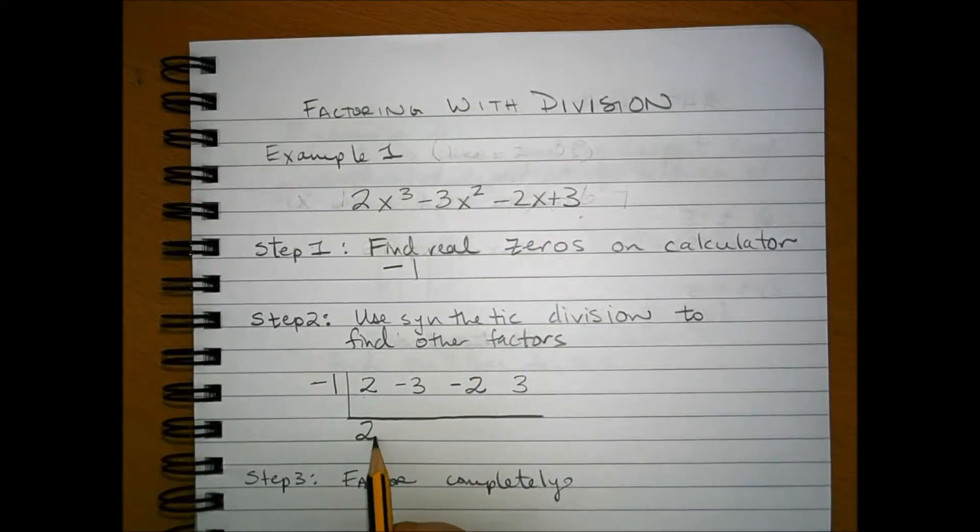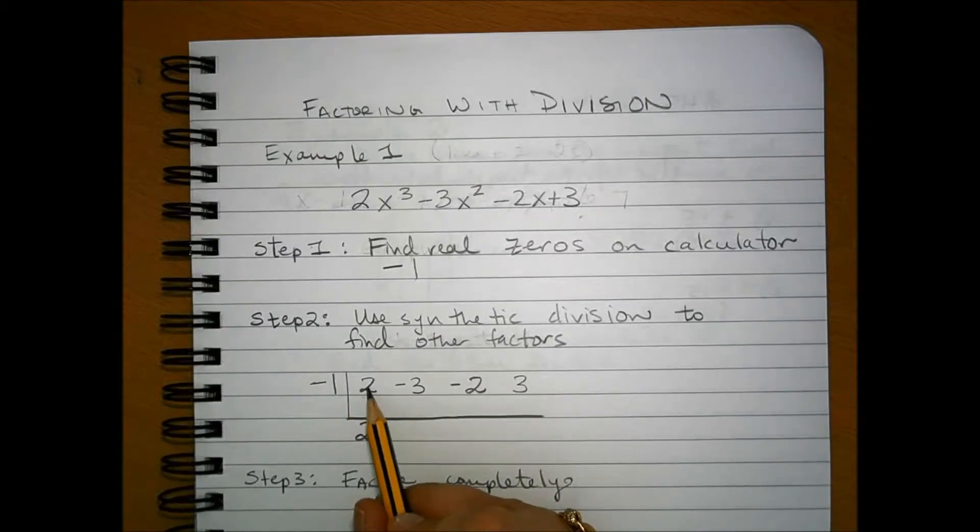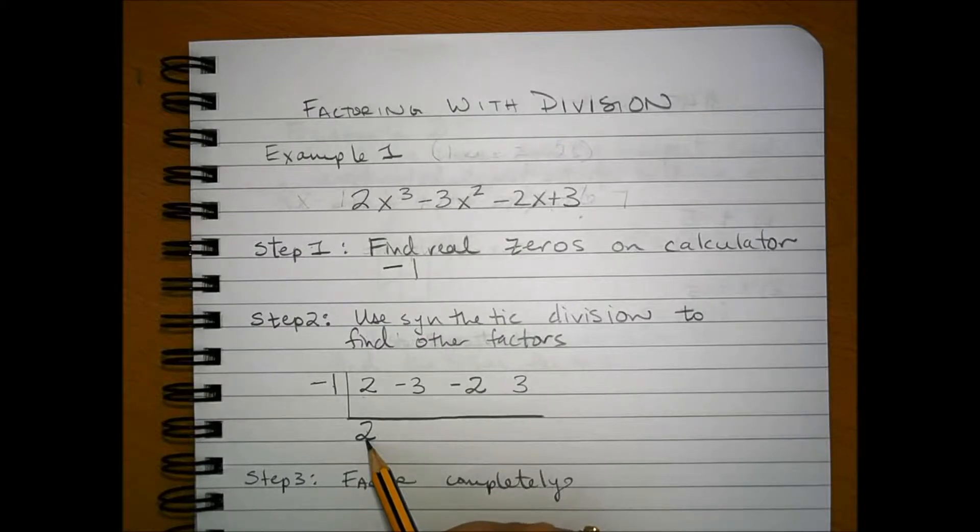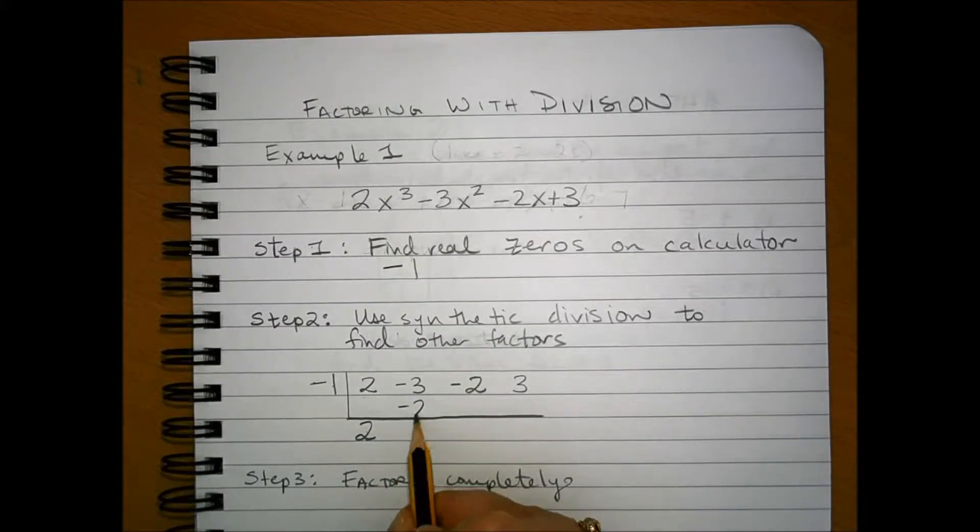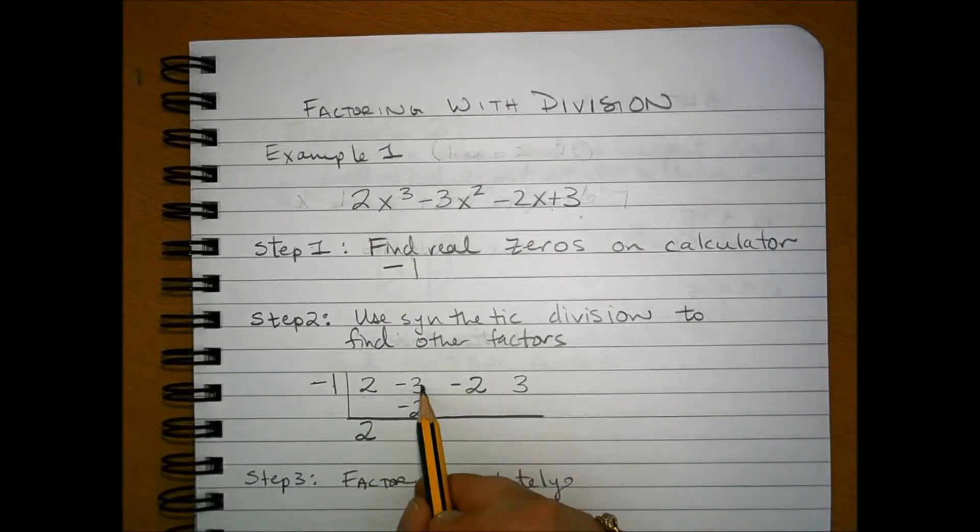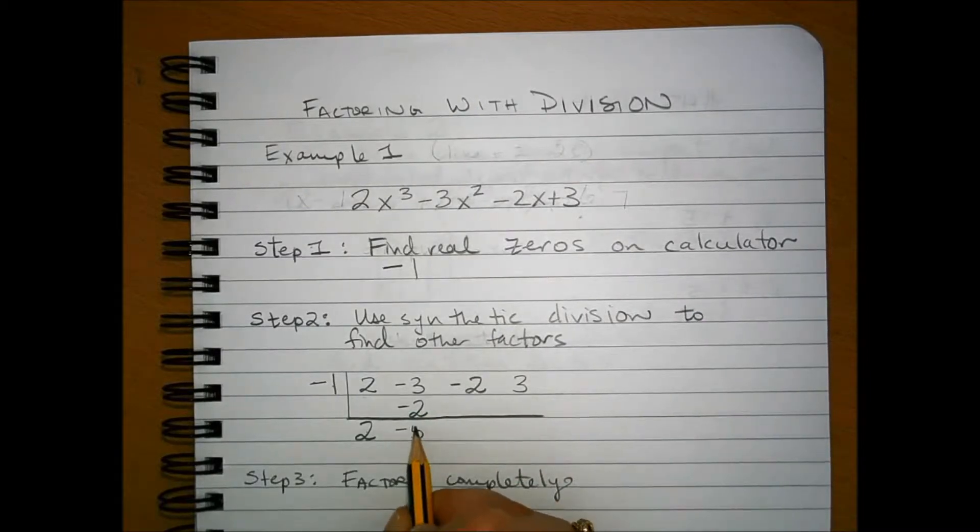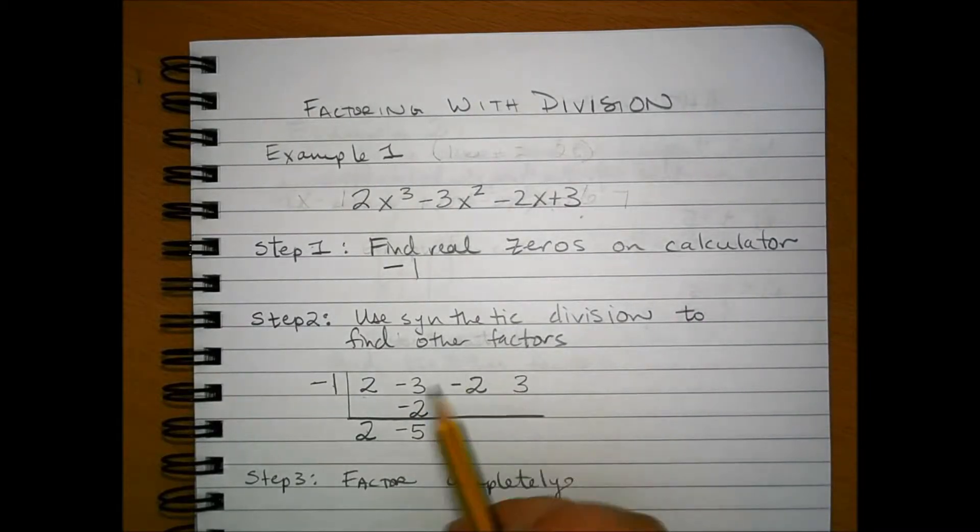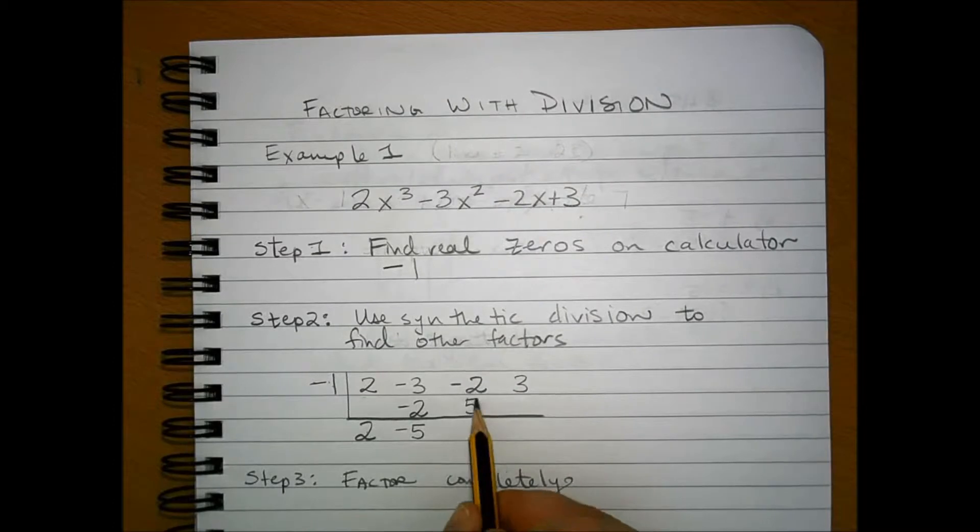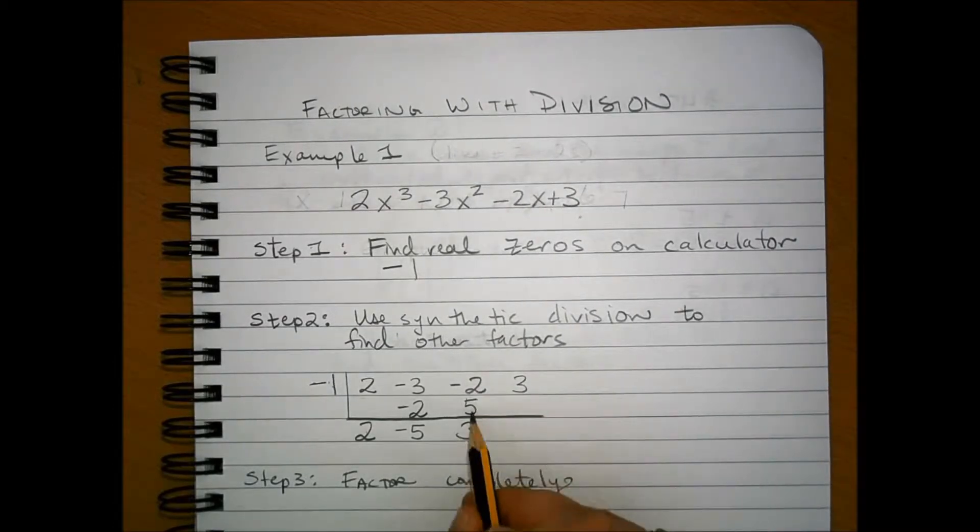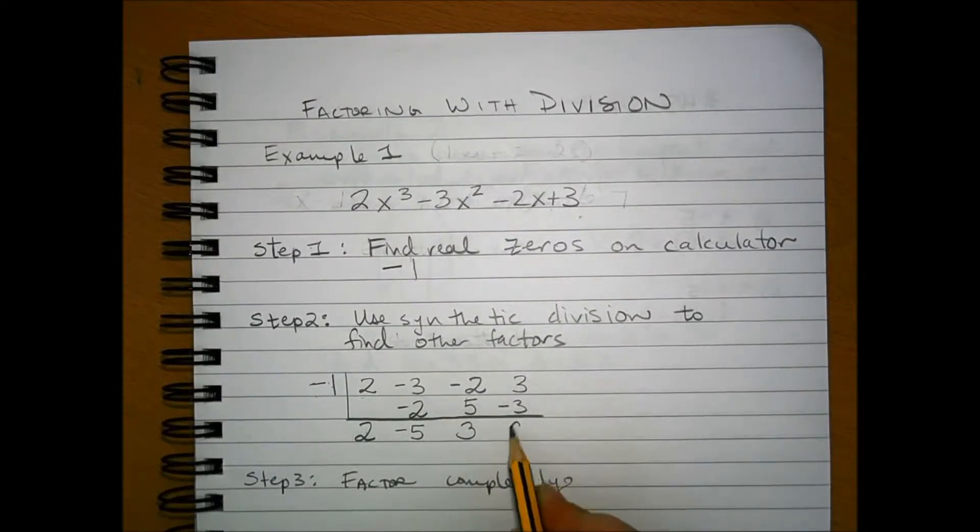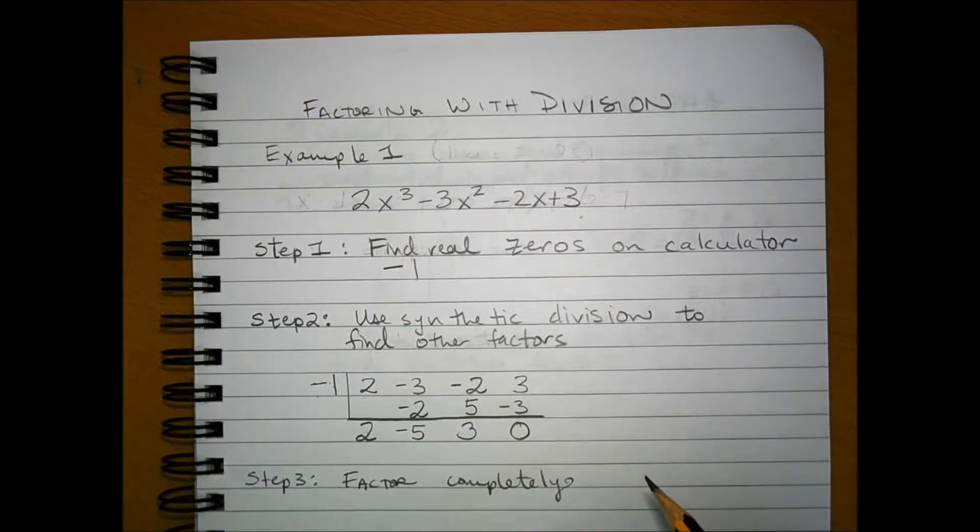We're going to bring down the first term, the first number, multiply the zero by this first number. Then we're going to add, and then we're going to multiply again. Then we're going to add, and then multiply again, and then finally add.